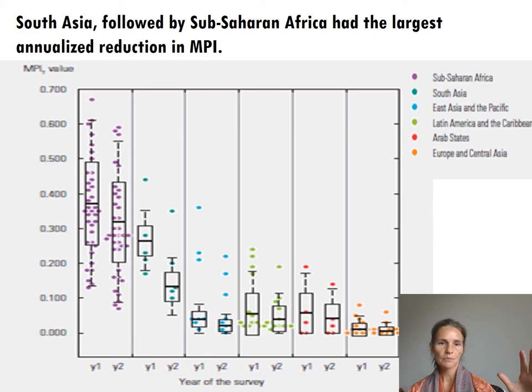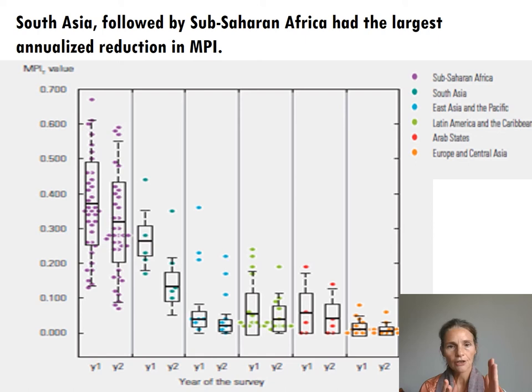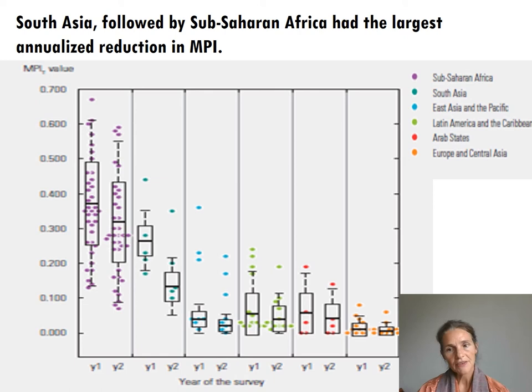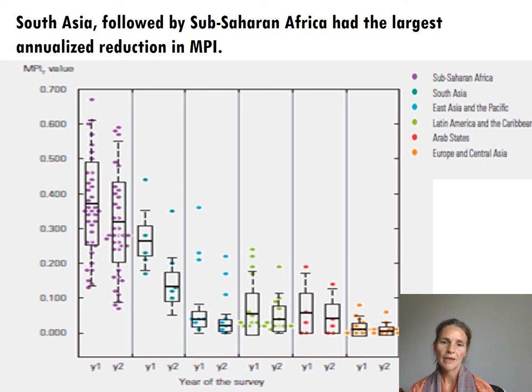Looking across regions, driven by the incredible reduction of India — which cut its MPI by half, one of four countries to do so, moving 273 million people out of poverty in a 10-year period — South Asia overall had the largest annualized reduction in MPI. Sub-Saharan Africa had the next biggest reduction. These are the two poorest regions, but it is still salutary that they are making strong progress.